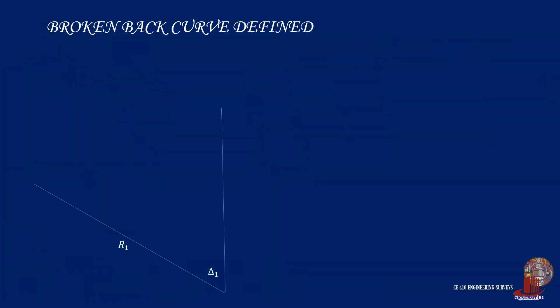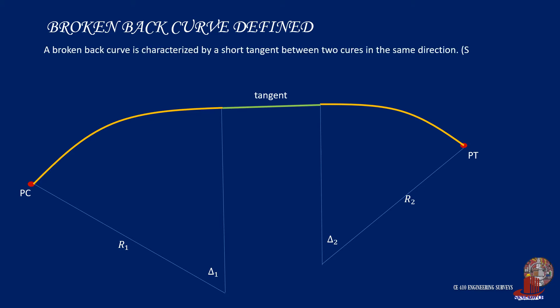A broken back curve is characterized by two simple curves connected by a short tangent. This type of highway curve is not recommended in design since most drivers do not expect succeeding curves in the same direction.